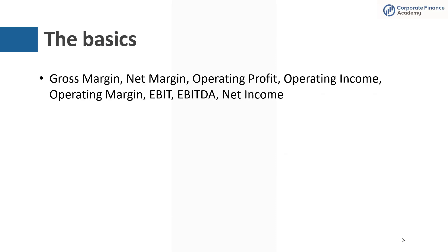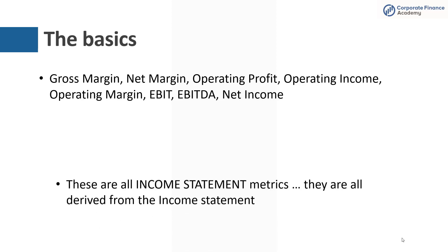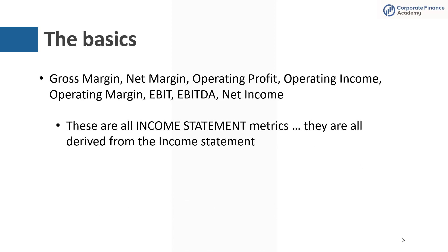There's a list of names here: gross margin, net margin, operating profit, operating income, operating margin, EBIT, EBITDA, net income. You hear all these different terms. Some of them mean exactly the same thing; some of them are different. Today we're going to try to help you understand what means what.